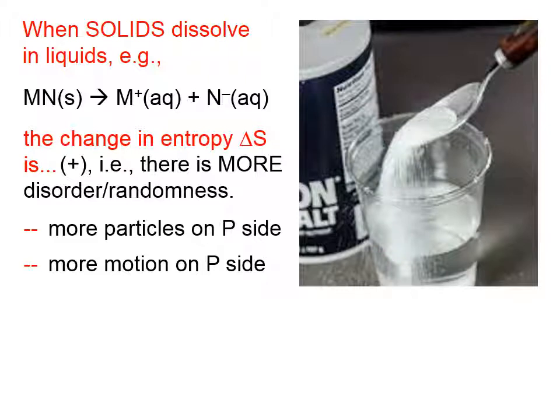M plus is floating around the solution now. N minus is floating around the solution now. On the reactant side, the metal, non-metal, is a solid. It's sitting there at the bottom of the beaker. There's not nearly as much motion.